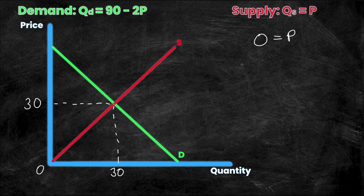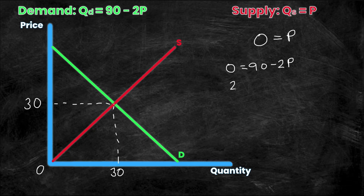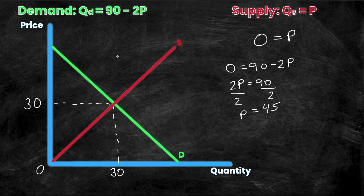For the demand curve, I set Qd equal to zero: zero equals 90 minus 2p. Solving for p, I move 2p to the left side to get 2p equals 90, then divide both sides by 2. So p equals 90 divided by 2, which is 45. Now I have my last value needed to calculate consumer surplus: the demand curve intersects the price axis at 45.